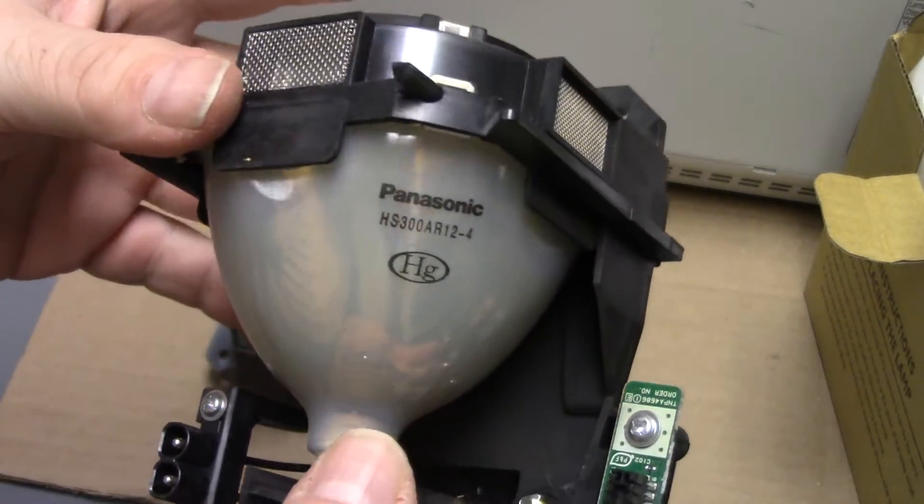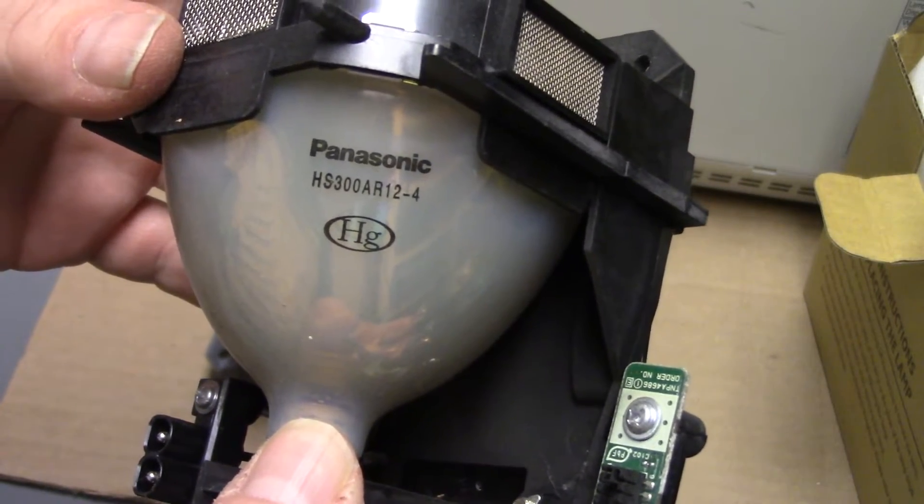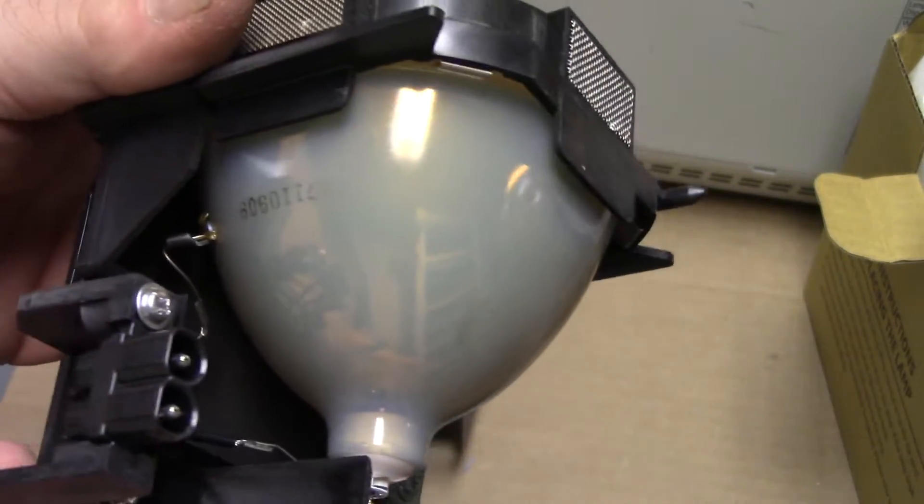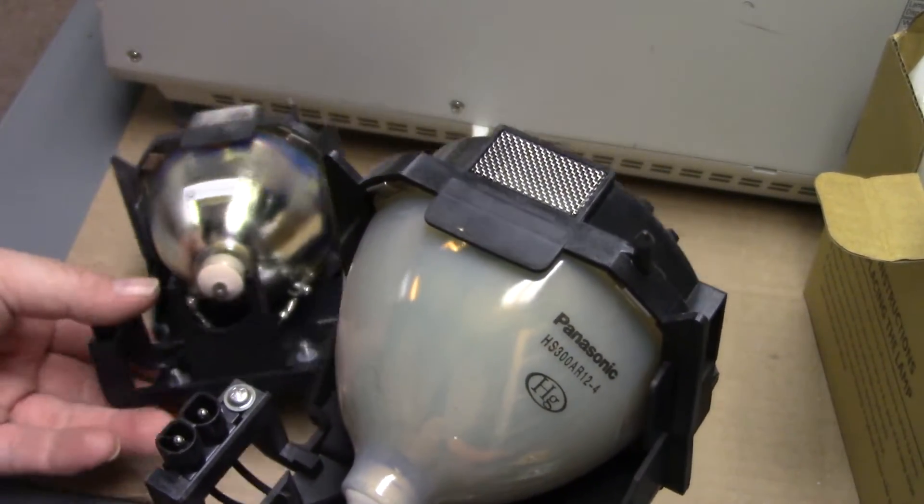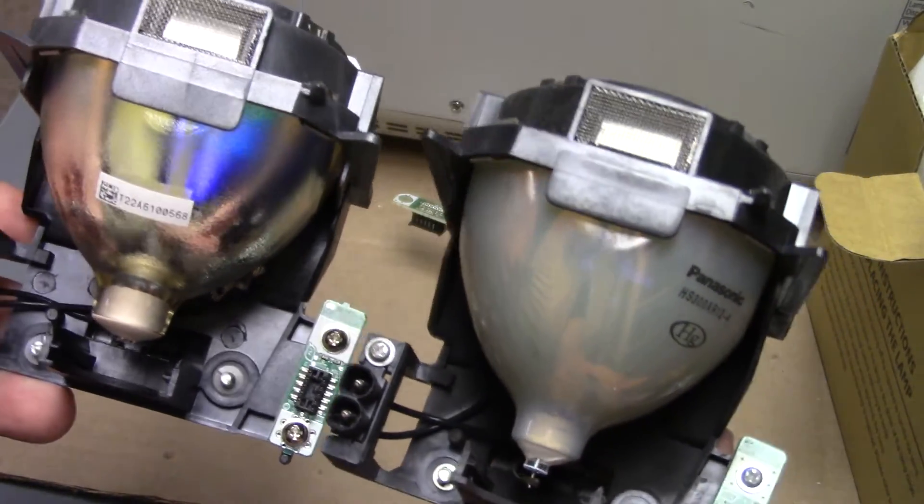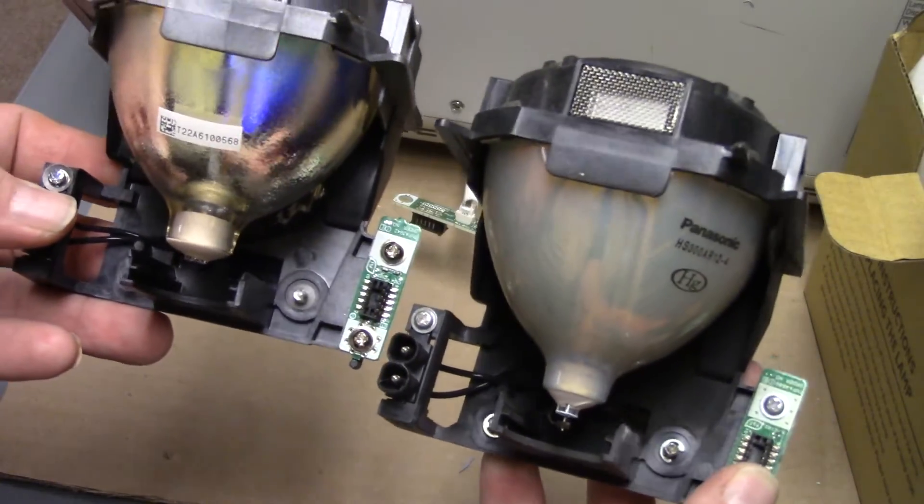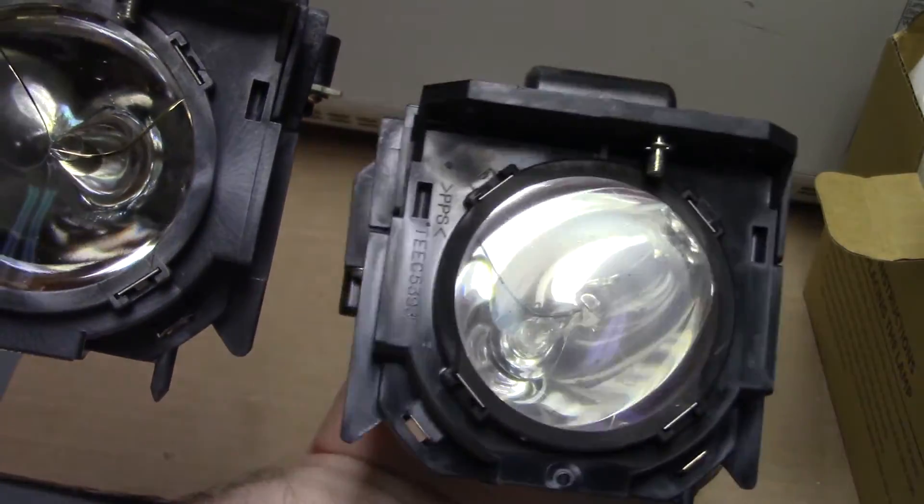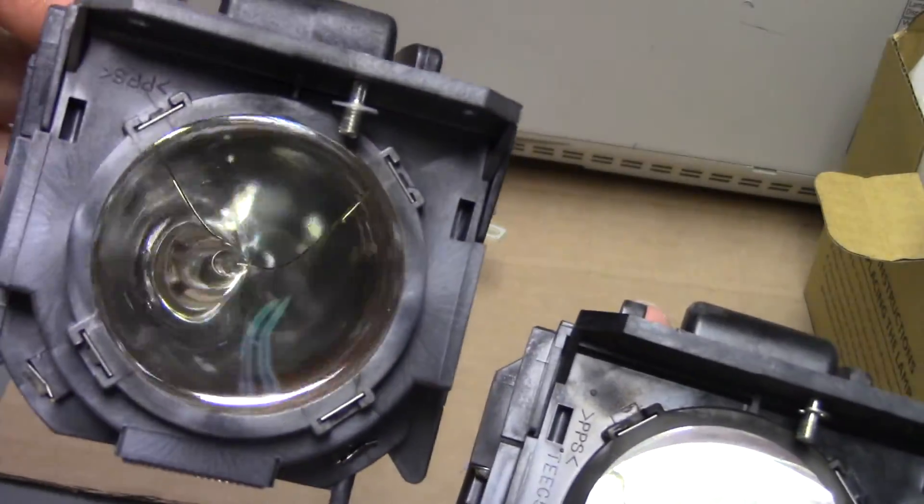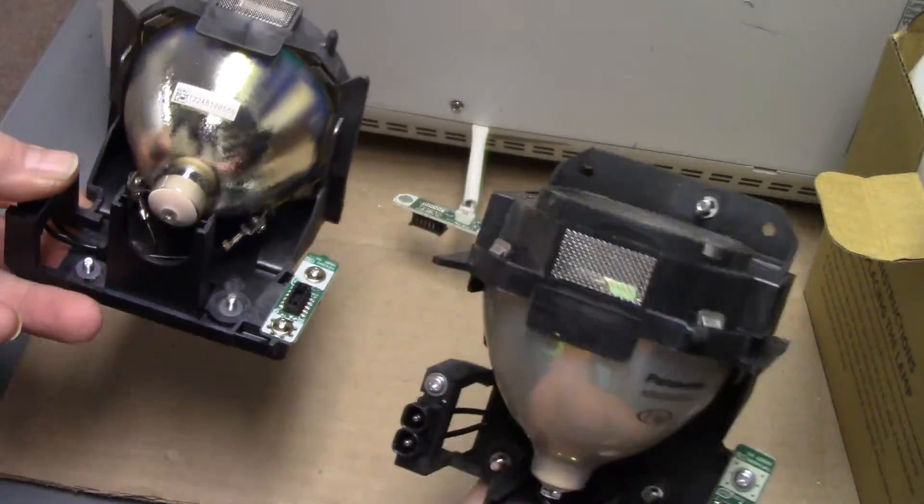Here's an OEM HS300 AR12-4. It's a 300 watt bare lamp. And then you can see the Osram replacement. They did a real good job. Their reflector shape's the same. I mean, this one's worn out and old. That's why it's foggy in there. But they run really well.